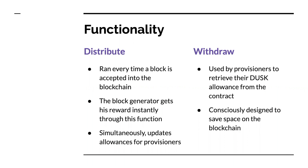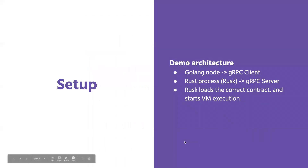The reason we do it this way is a conscious design choice to save space in the blockchain. If we have a full committee and distribute outputs every single block, that would mean a block would at a bare minimum have 129 transactions, which is too many. This way we can batch them up, and whenever a provisioner wants to take out their rewards they can do so via a contract call.